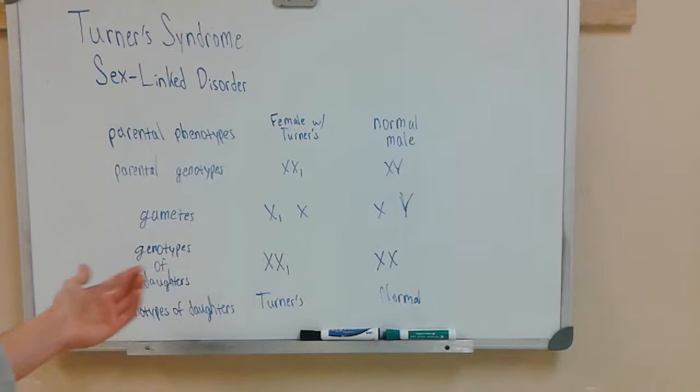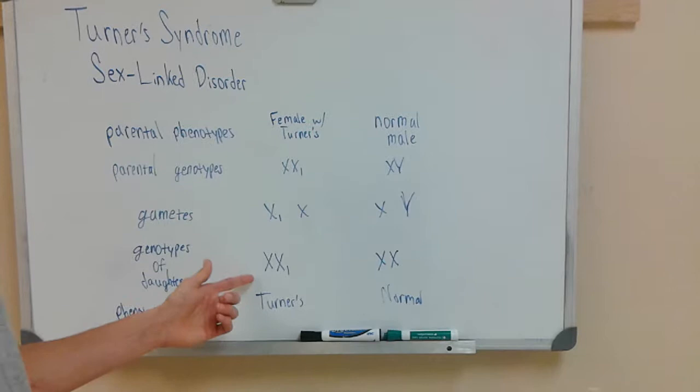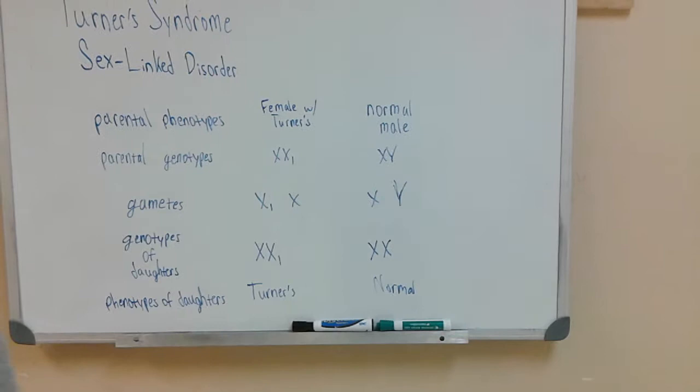After doing the Punnett square, one daughter will have Turner's because they have it on the chromosome, and the other will be normal. This gives a 50% chance of getting a normal daughter and 50% chance of Turner's because the male is normal.